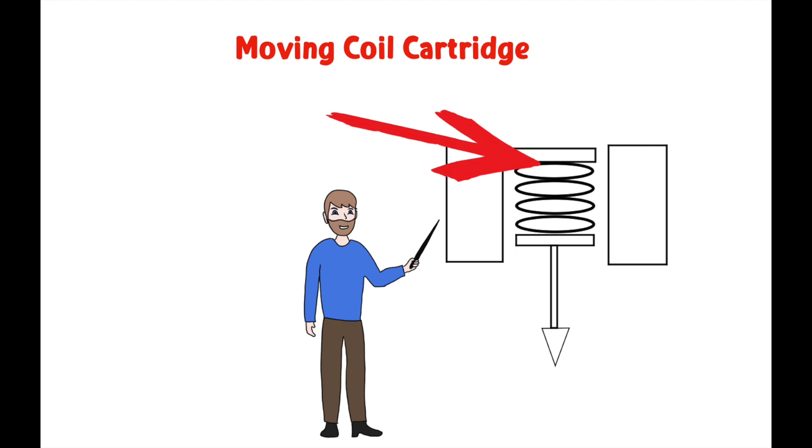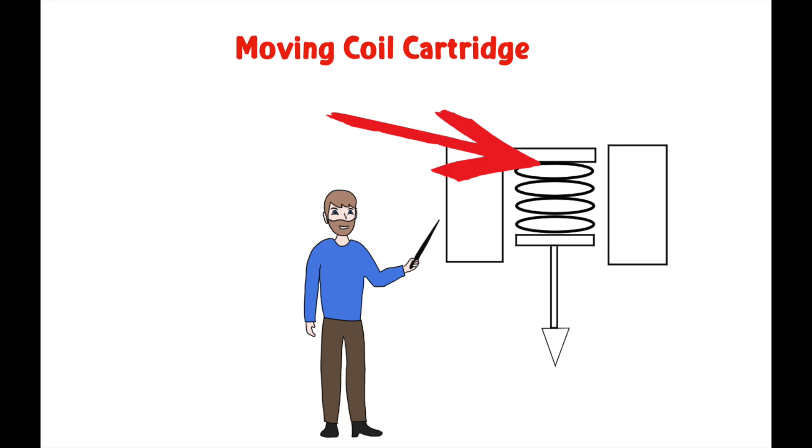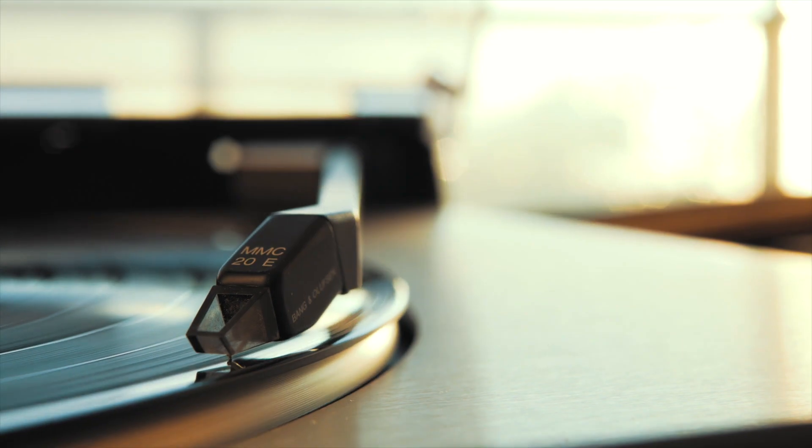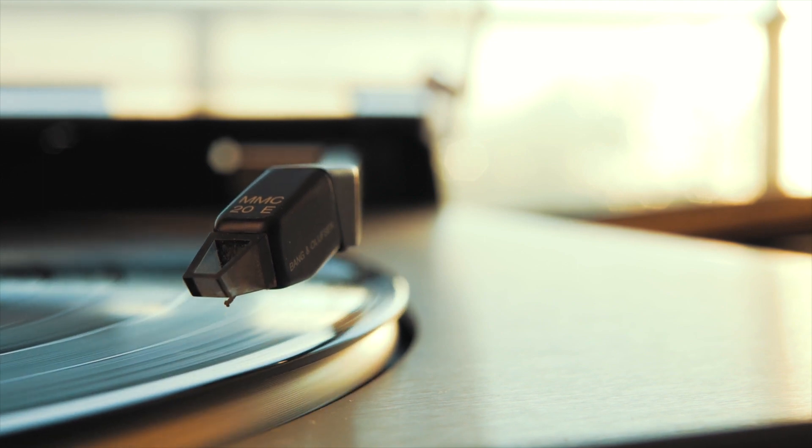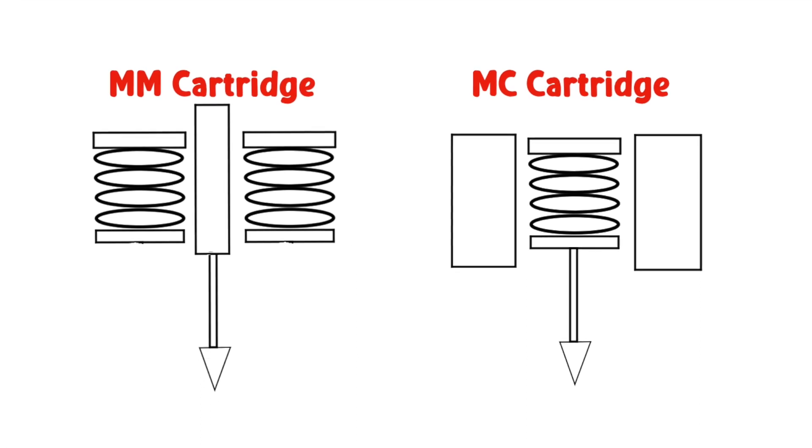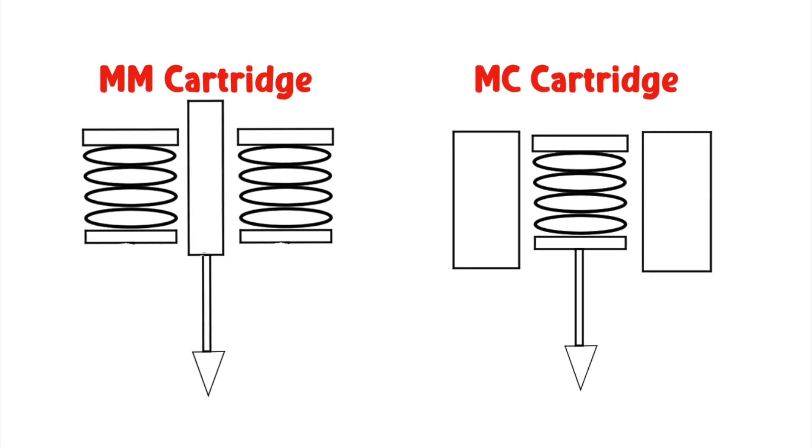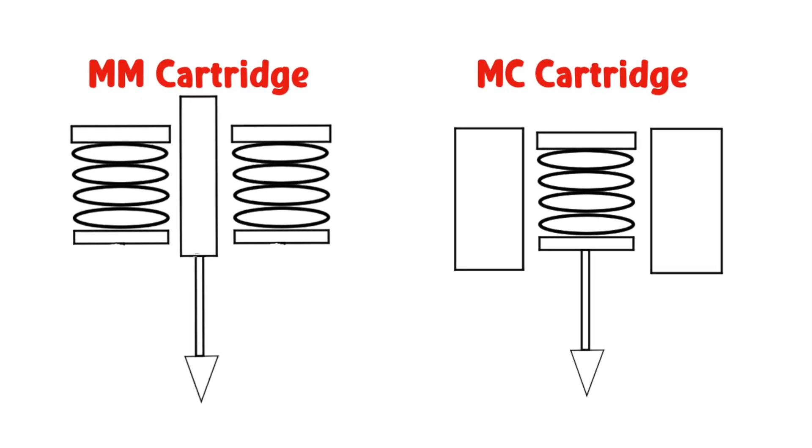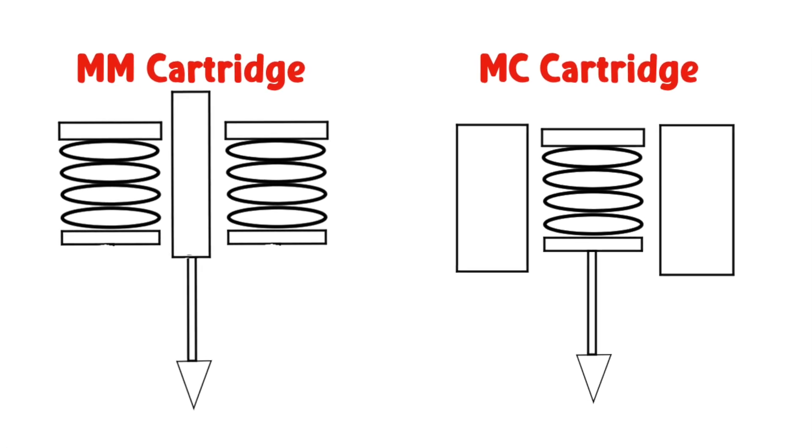Everything is reversed inside of the MC cartridge. Here, the coils are located at the end of the cantilever, and the magnets are stationary. The coils vibrate with the movement of the stylus, and the signal is produced. The only difference is the signal produced in this setup is a low-level output signal because the coils are smaller. The signal requires more amplification than the high-level output signal produced by the moving magnet style of cartridge.